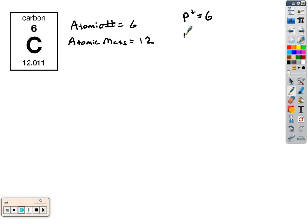To find the number of neutrons, what we have to do is take the mass minus the atomic number. So we're going to do twelve minus six. There are six of those.